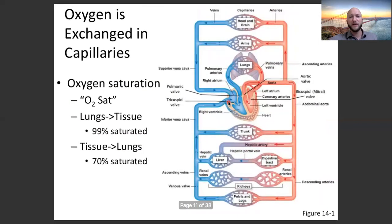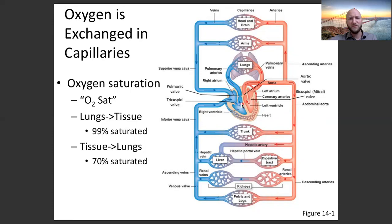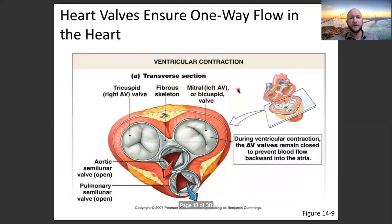We have two types of valves: AV valves — atrioventricular — between the atria and the ventricle, and semilunar valves between the ventricles and the arteries. During ventricular contraction, the AV valve remains closed to prevent blood flow back into the atria. We will talk a lot more about valves opening and closing later on.